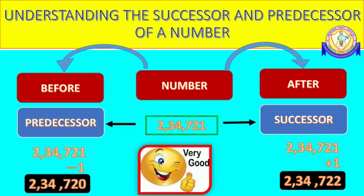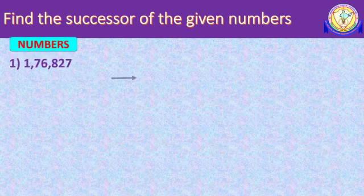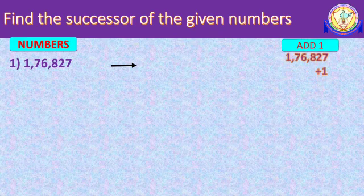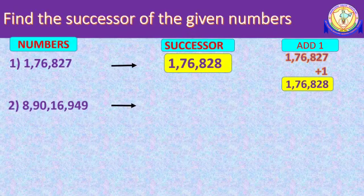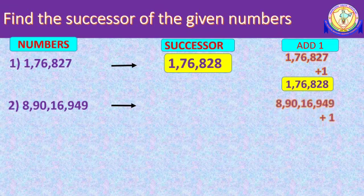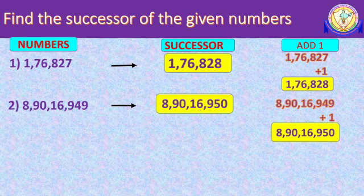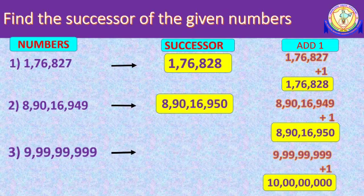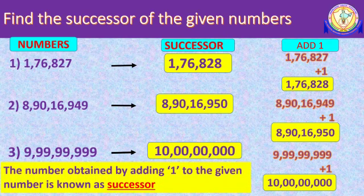Let us find the successor of the given number. The successor of 1,76,827 is 1,76,827 plus 1, which is 1,76,828. The successor of 8 crore 90,16,949 plus 1 gives 8 crore 90,16,950. The successor of the largest 8-digit number is the smallest 9-digit number, that is 10 crore. Therefore, by adding 1 we get the successor of the given number.